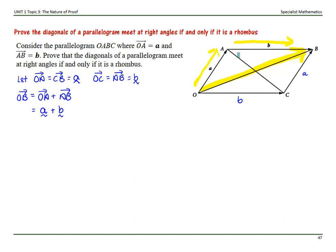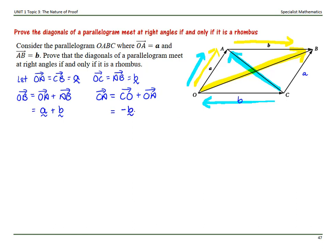Looking at our other diagonal, which is CA. CA is going to equal CO plus OA, which I could write as a minus b.